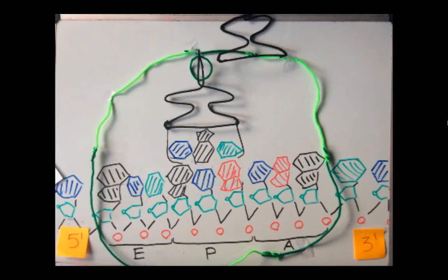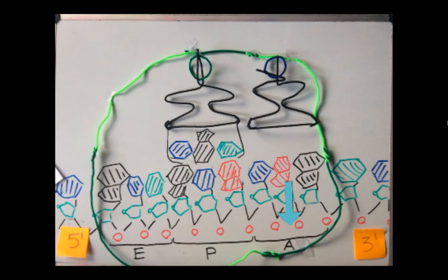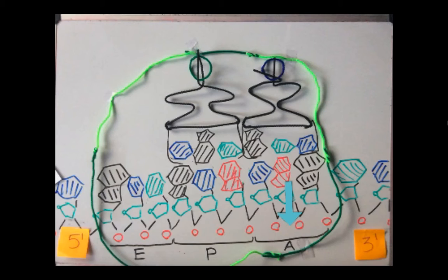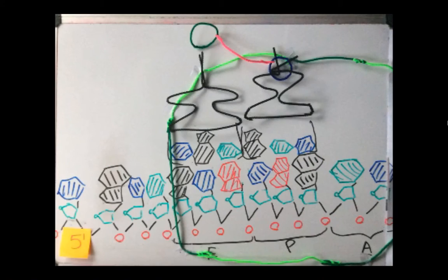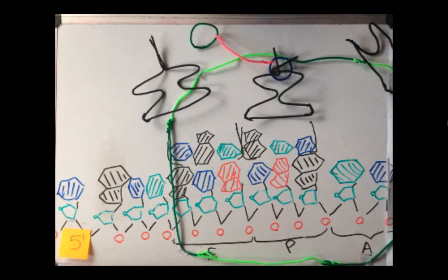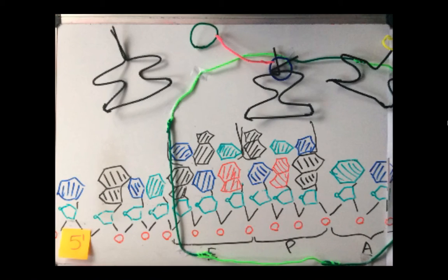Another tRNA enters into the A section, with a new amino acid for the next codon of the mRNA. A peptide bond is formed between the two amino acids currently in the ribosome. The ribosome shifts along the mRNA from 5' to 3'. The tRNA that was previously in the P section is now in the E section, where it exits the ribosome, no longer attached to its amino acid.